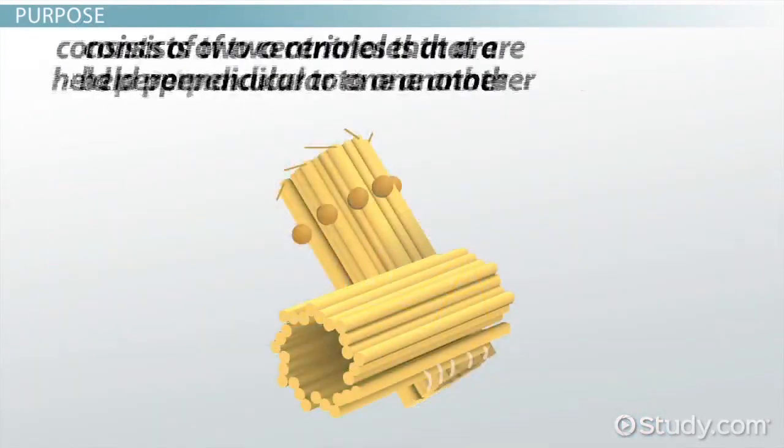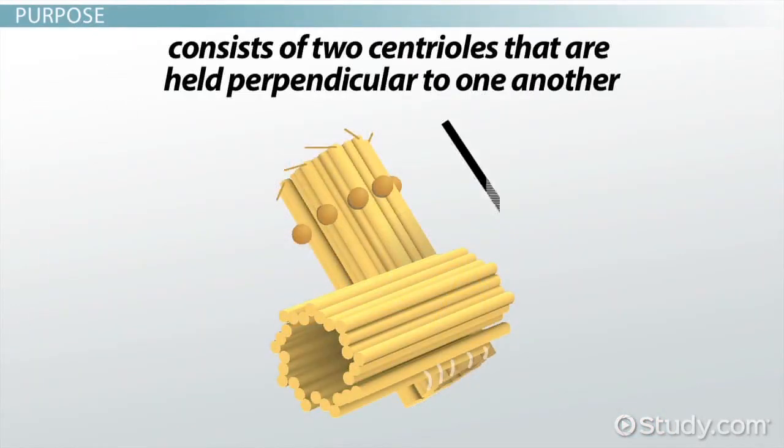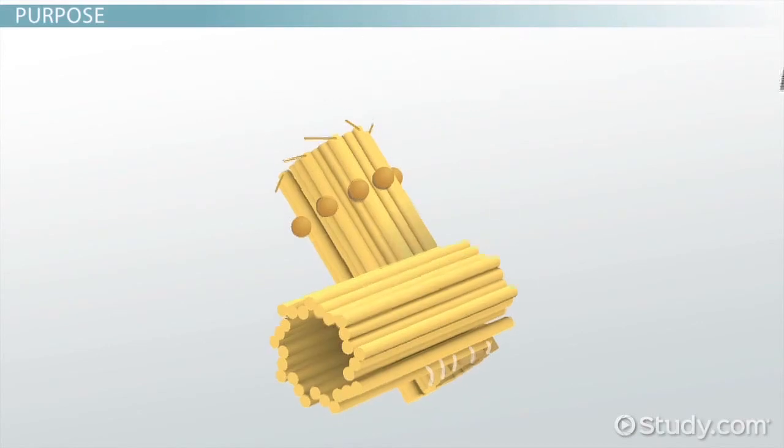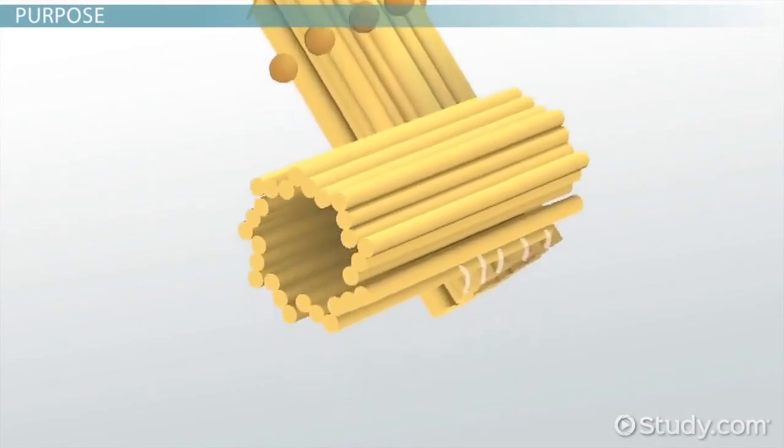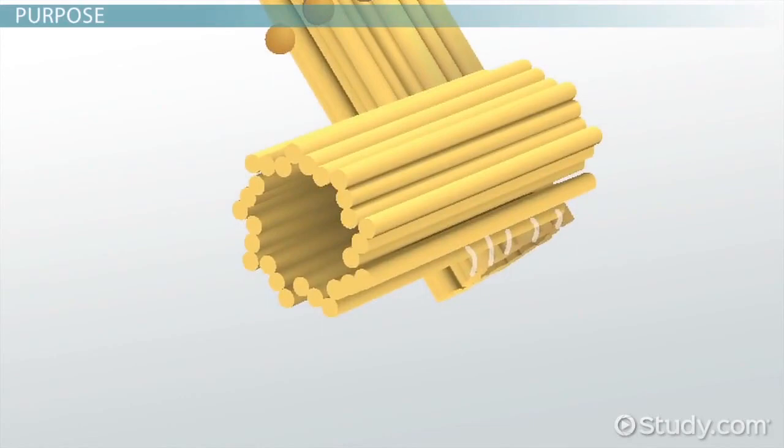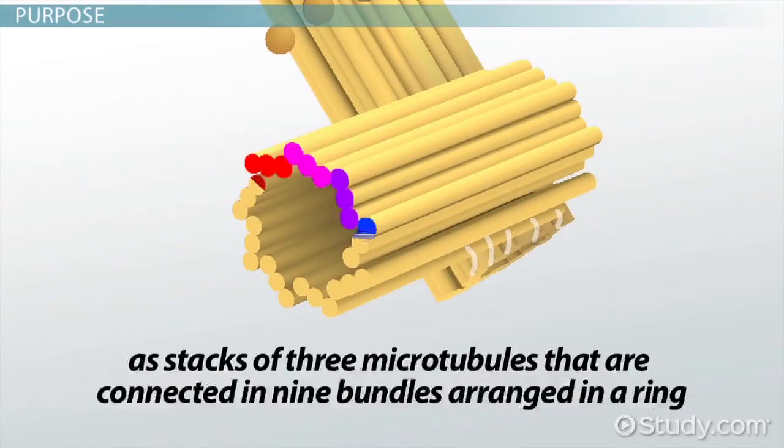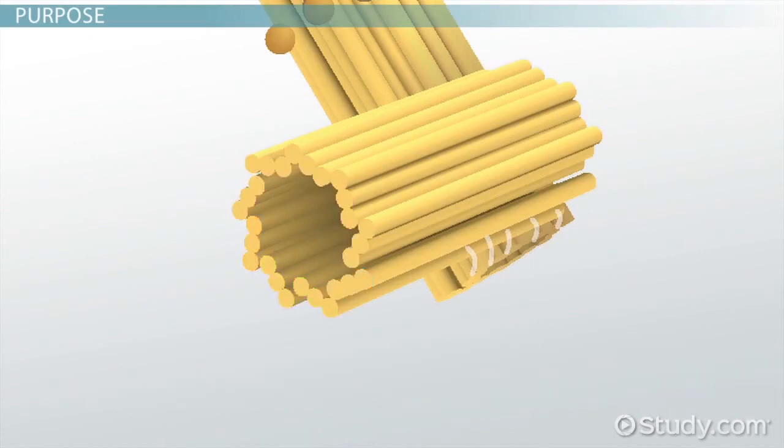The centrosome itself consists of two centrioles that are held perpendicular to one another. The centrioles are just a fancy way to name a specific arrangement of microtubules. They are held together in a set way, as stacks of three microtubules that are connected in nine bundles arranged in a ring. If you were to cut a cross-section of it, it would appear to look like a star.